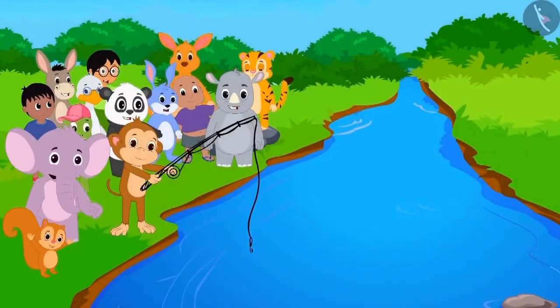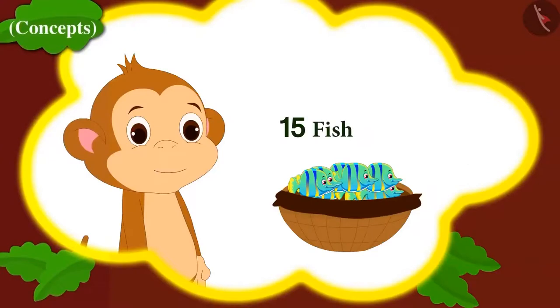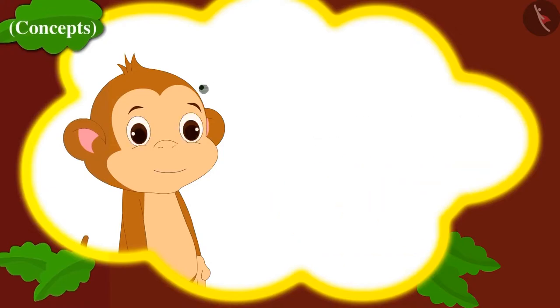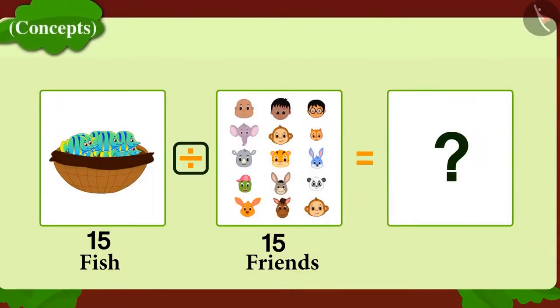All the people have reached the river bank for fishing. Babban caught 15 fish. He is thinking that he would like to divide the fish equally among 15 of his friends. To find out how many fish he will have to give to each friend, he quickly wrote down this division on a piece of paper.